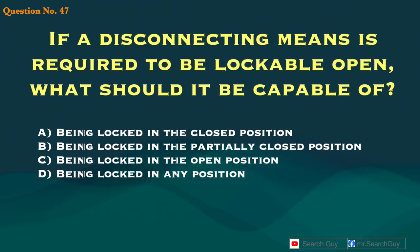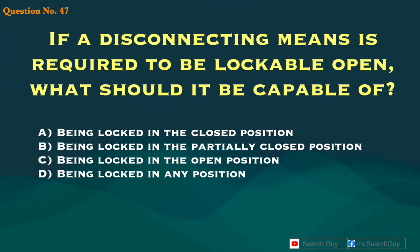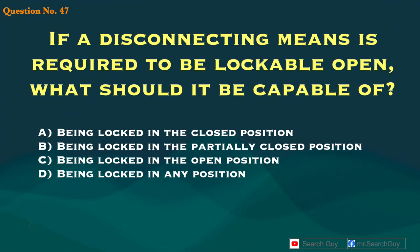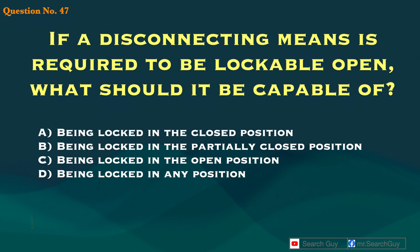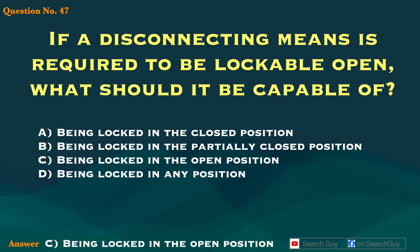Question 47. If a disconnecting means is required to be lockable open, what should it be capable of? A. Being locked in the closed position. B. Being locked in the partially closed position. C. Being locked in the open position. D. Being locked in any position. Answer: C. Being locked in the open position.